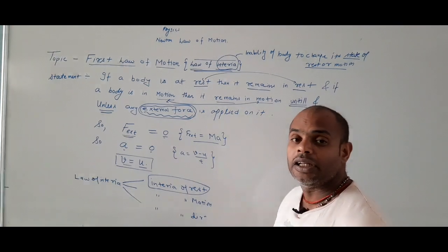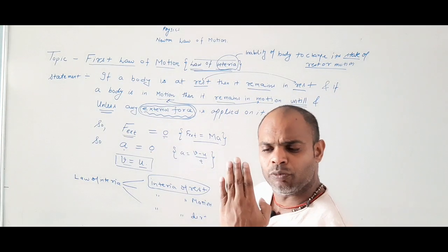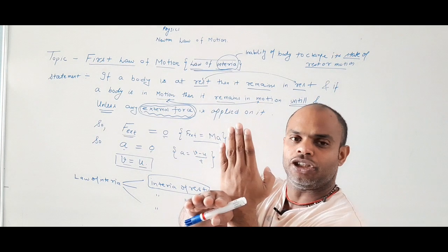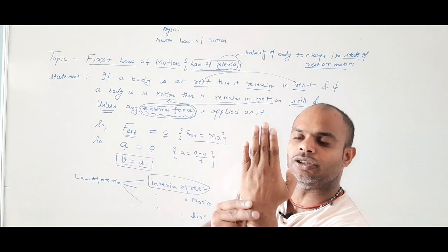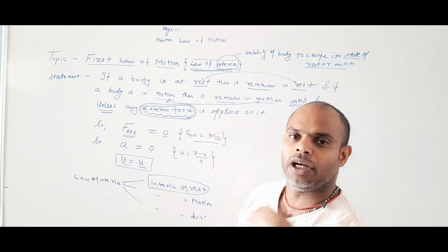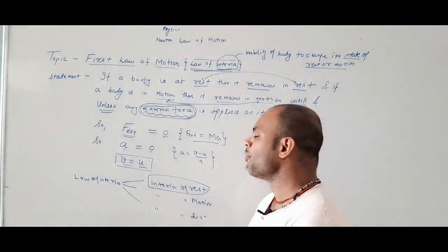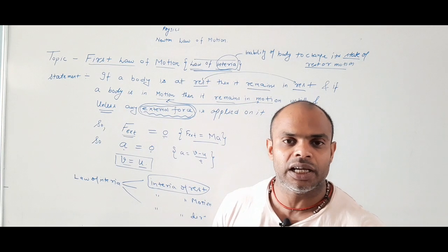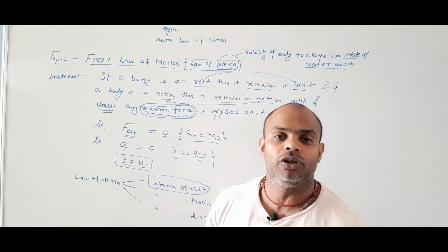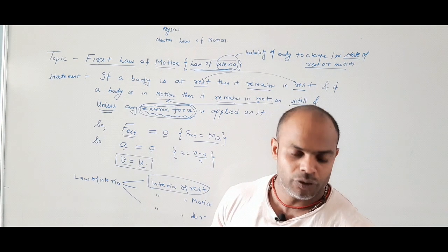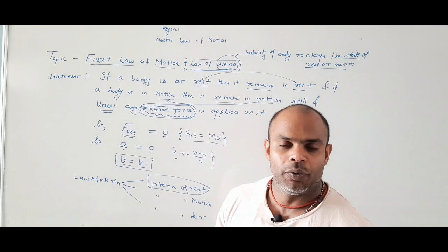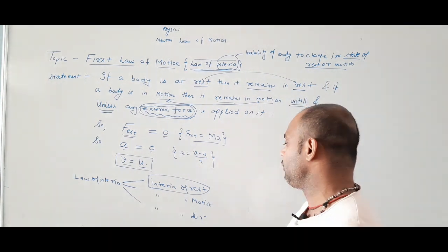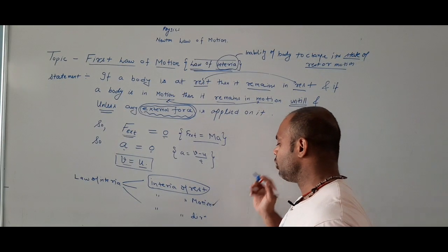Inertia of motion example: if the same train is moving with some velocity and suddenly it stops, your body will fall forward. Your whole body is in motion, but when the train hits the brake, your foot will stop while the upper body falls forward. That is the example of inertia of motion.